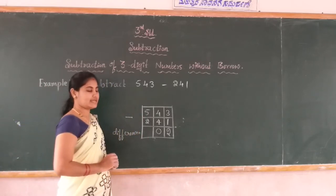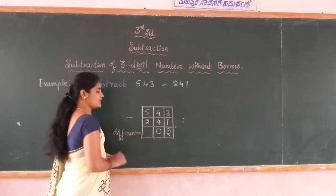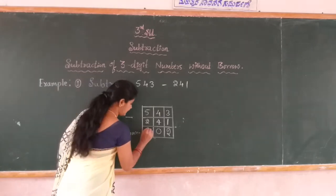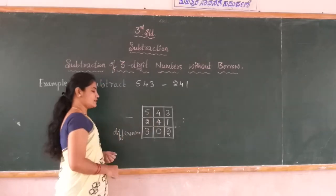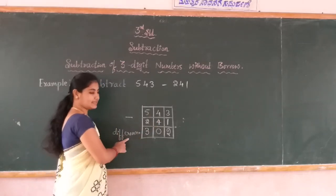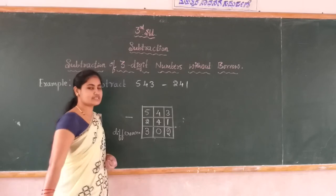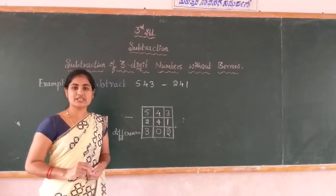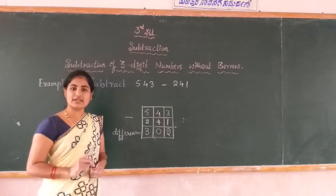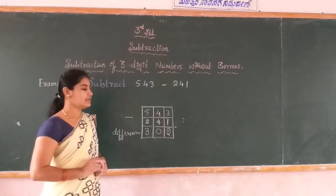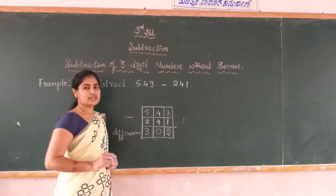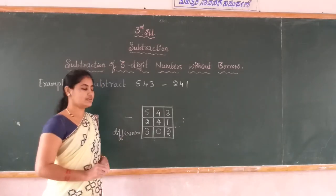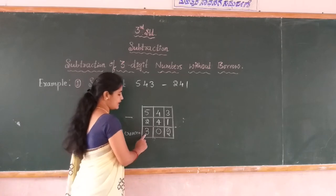Next you come to the hundreds place. 5 minus 2 is how much? 5 minus 2 is 3. This is the answer — we call it a difference. In case of subtraction we call it a difference; in case of addition we call the answer a sum. Therefore, the answer is 302.